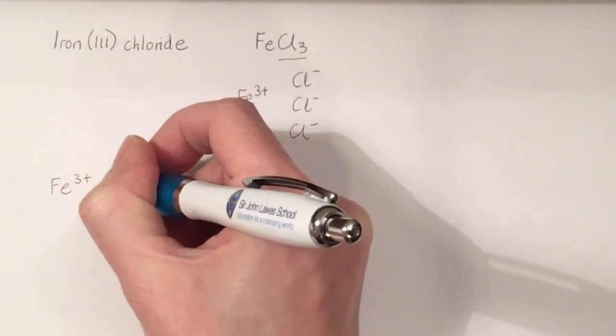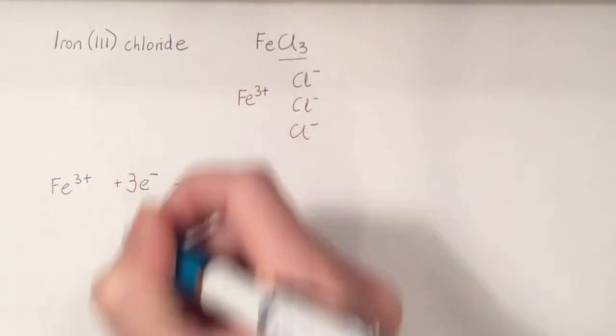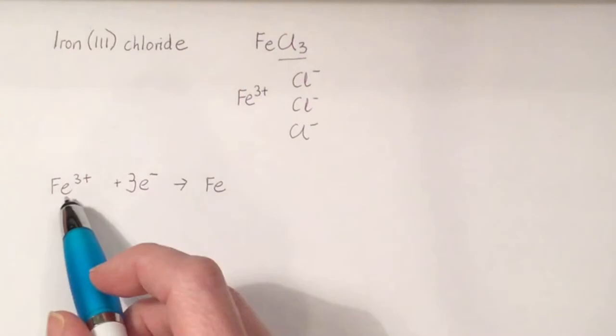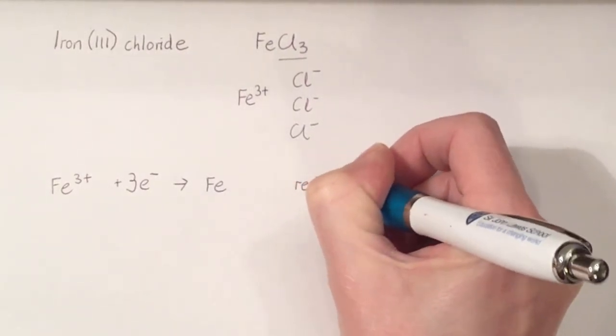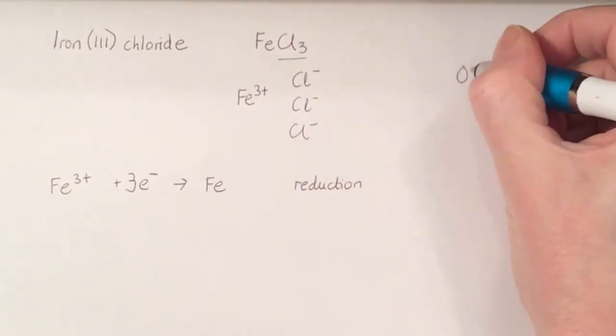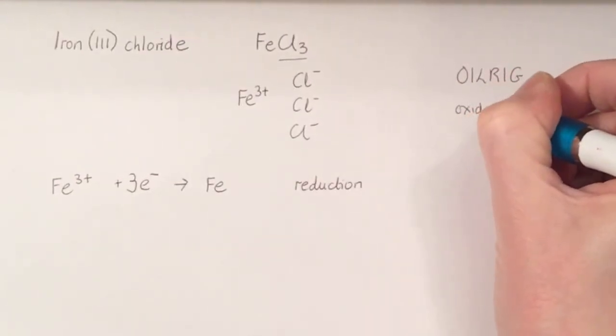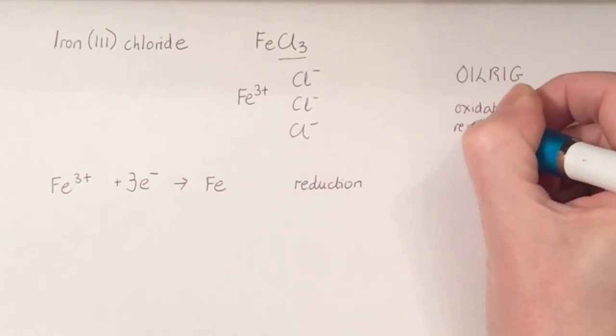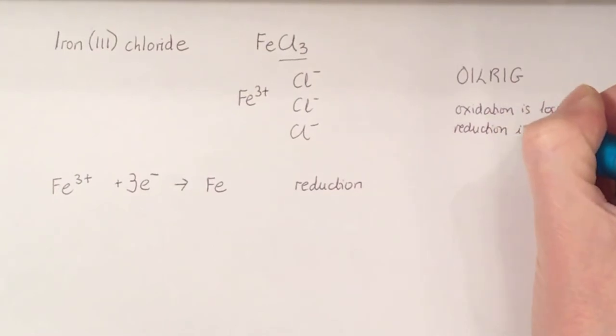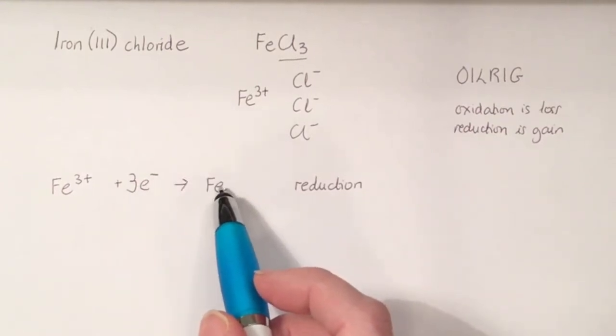And because we've gone from three plus to zero, we must have gained three electrons. Since we've gained electrons, then it must be reduction. Because if you remember what we've said previously, OIL RIG: oxidation is loss of electrons, and reduction is gain. So here, the iron three plus has gained three electrons to turn into iron atoms.